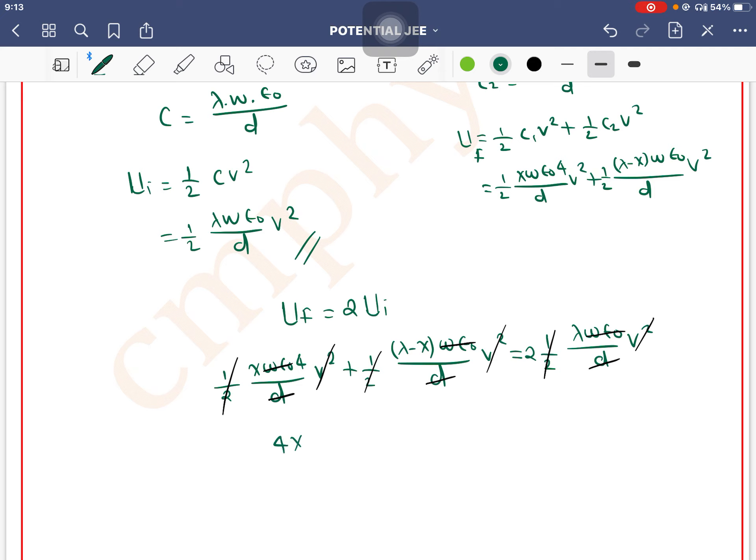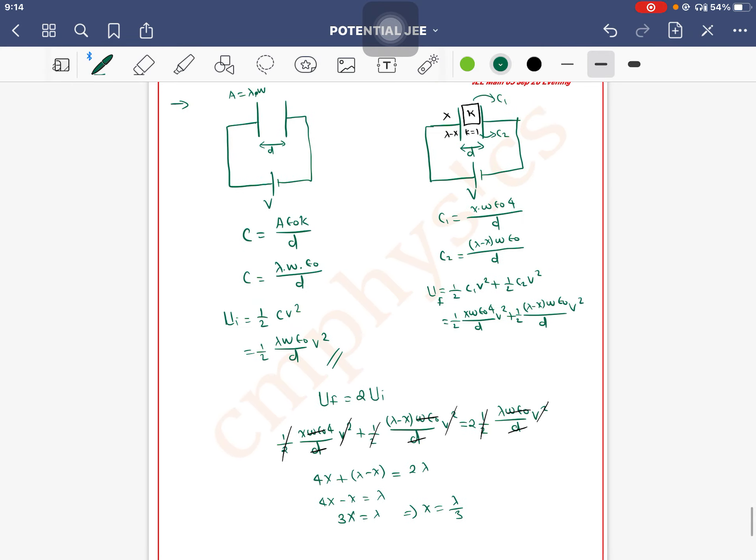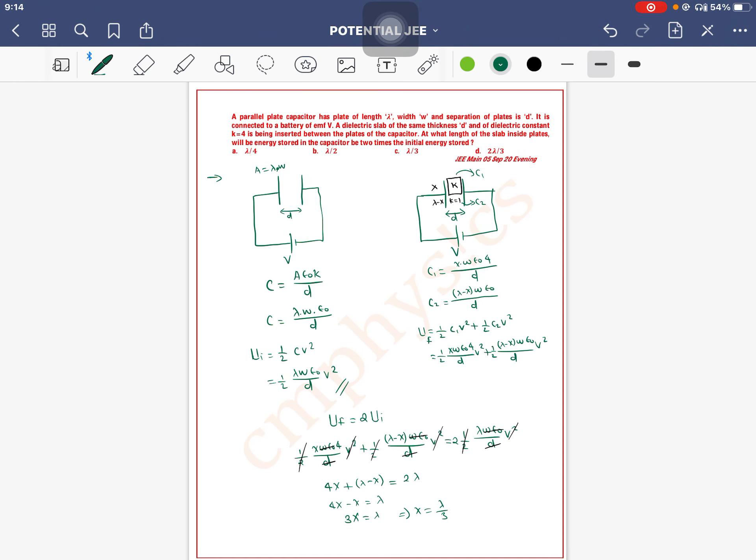We get 4x plus lambda minus x equals 2 lambda. So 3x equals lambda. Therefore x equals lambda by 3. When x equals lambda by 3, the energy will be doubled. So option C is the correct one.